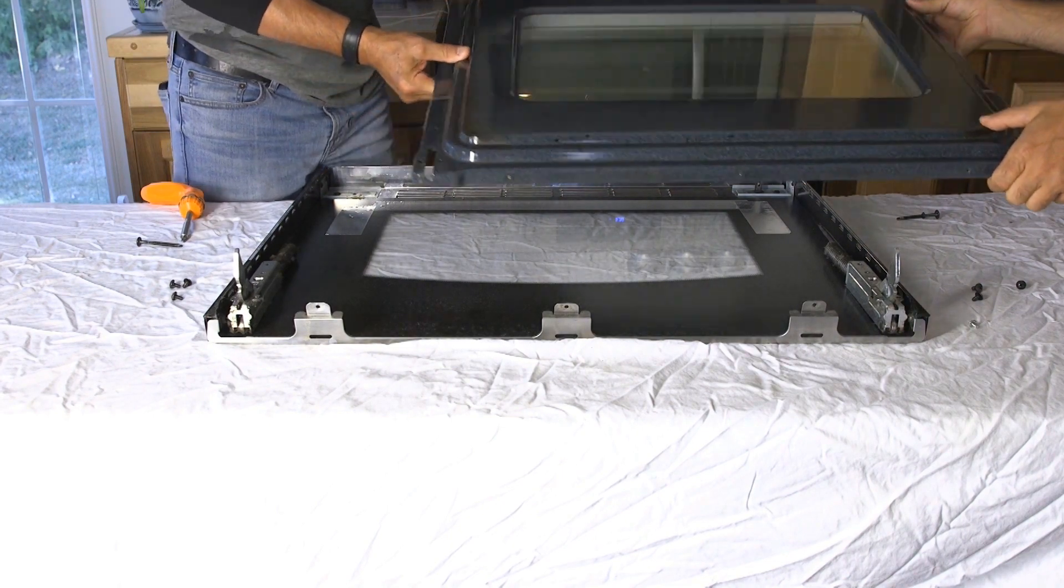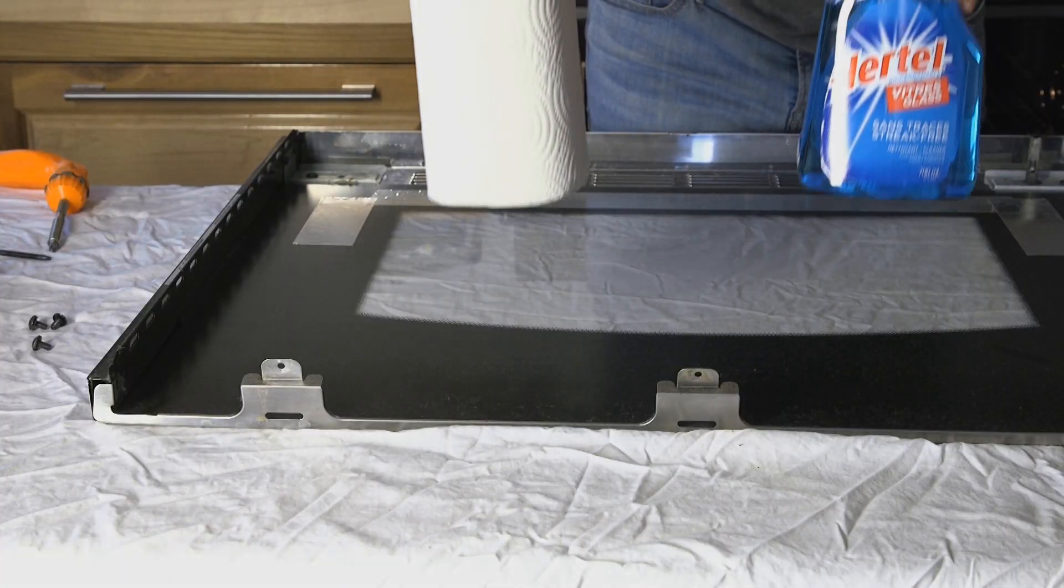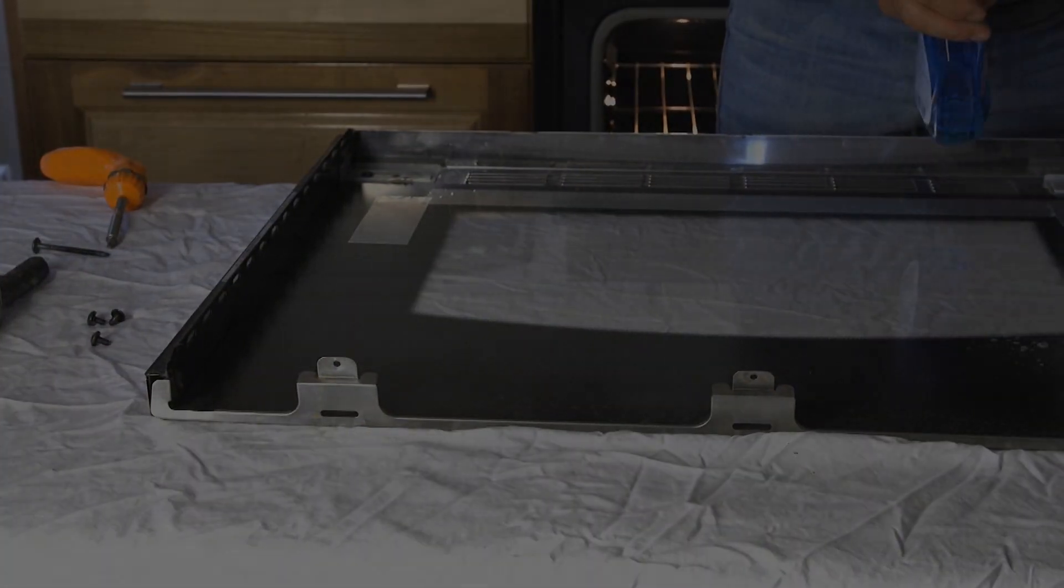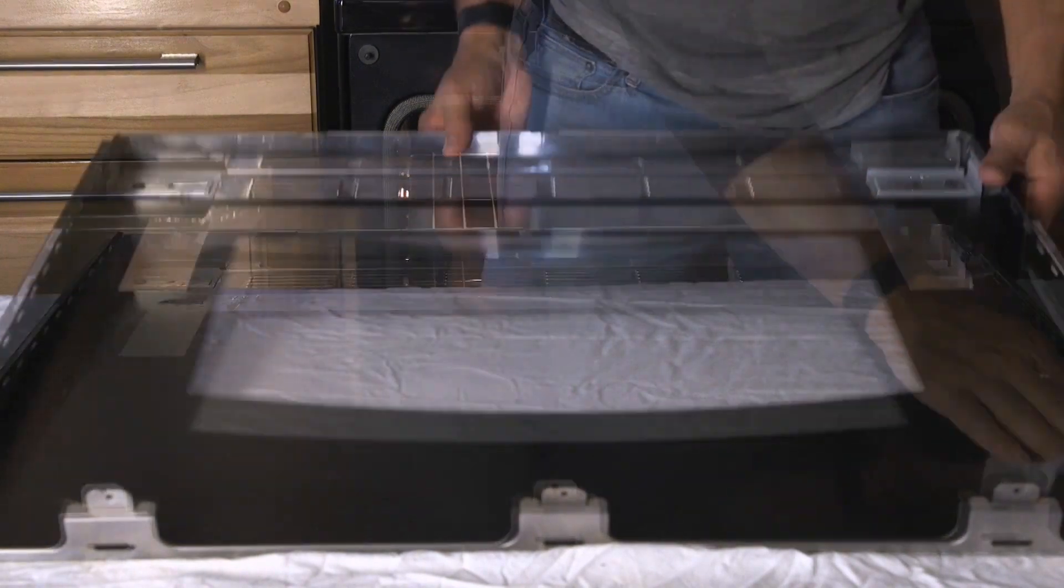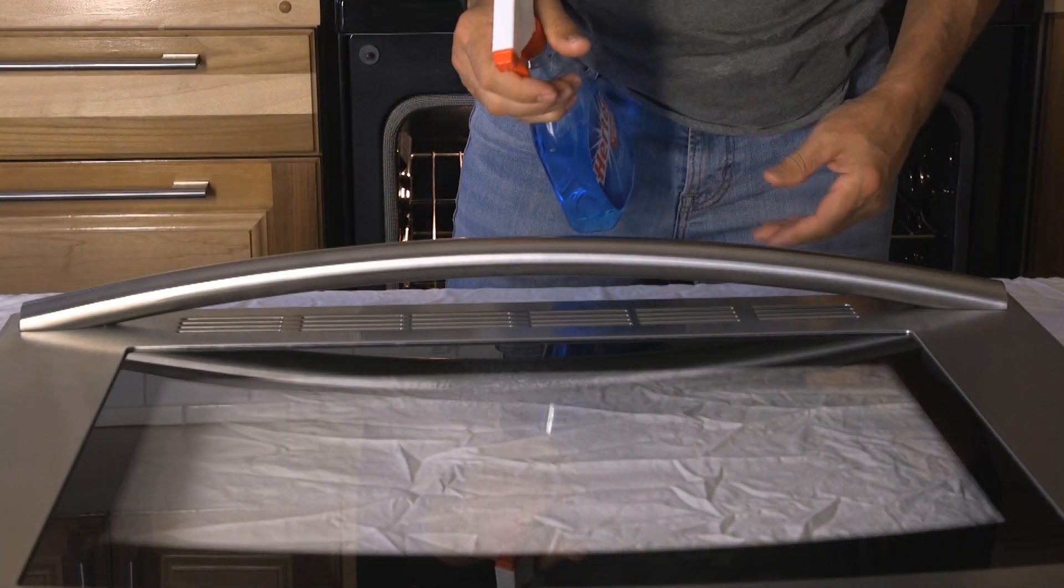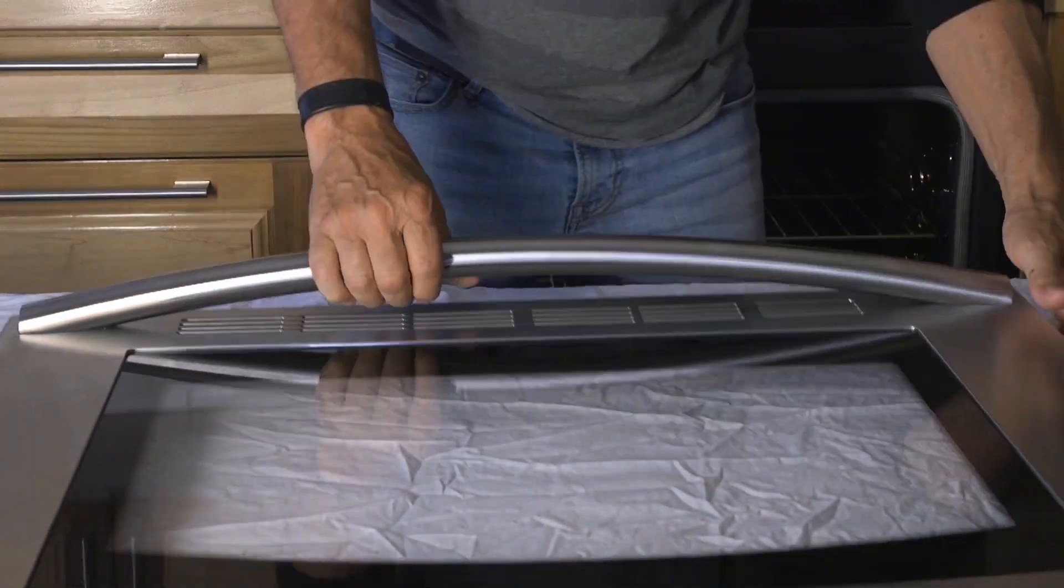When you're done, set the back panel aside and start cleaning the first window. At this point, we are using regular household cleaning product. Once you're done cleaning both sides of the front panel, just set it aside and bring back the back panel.